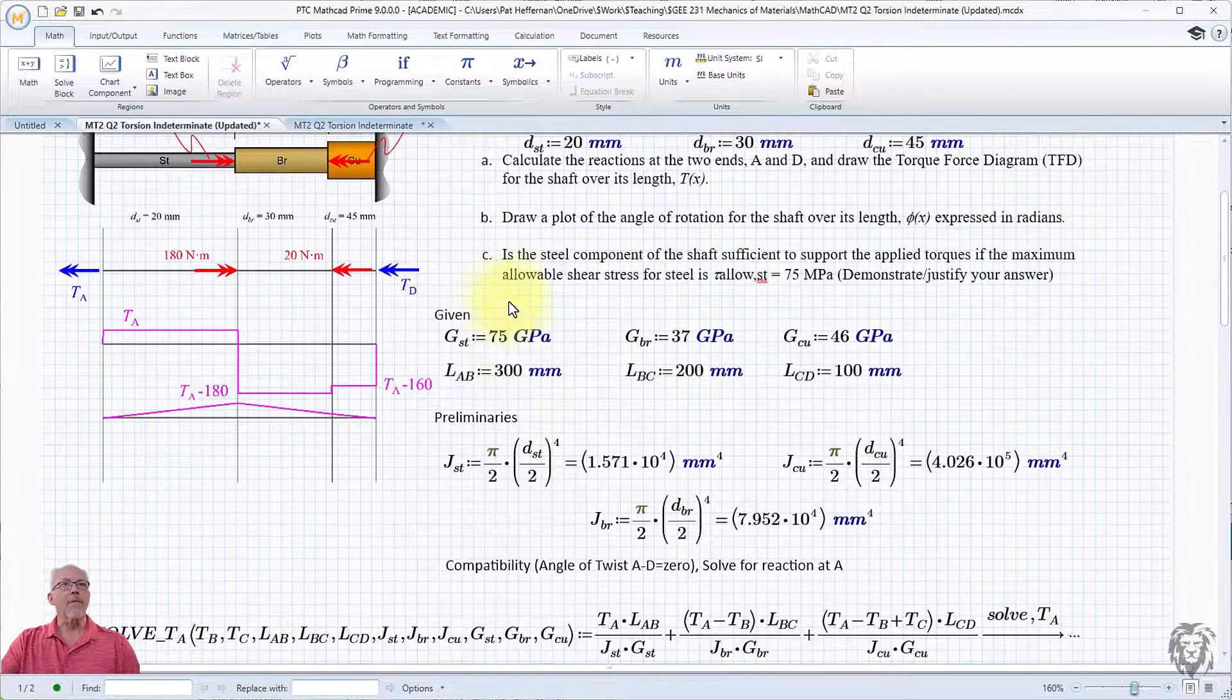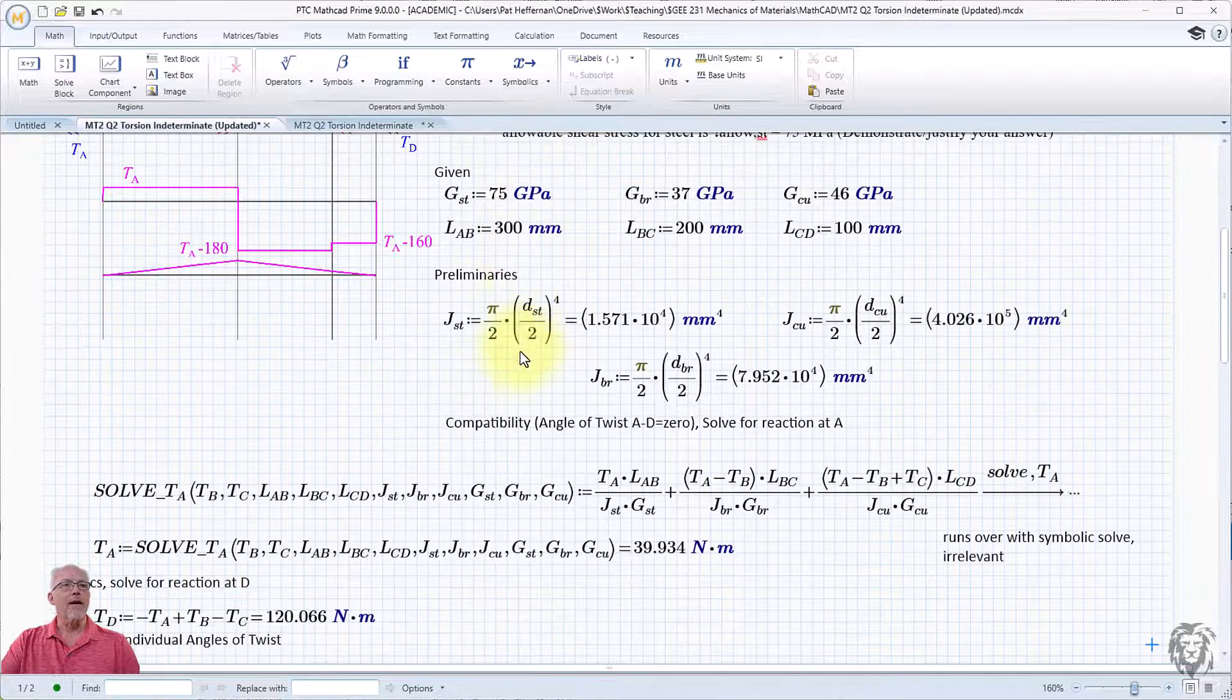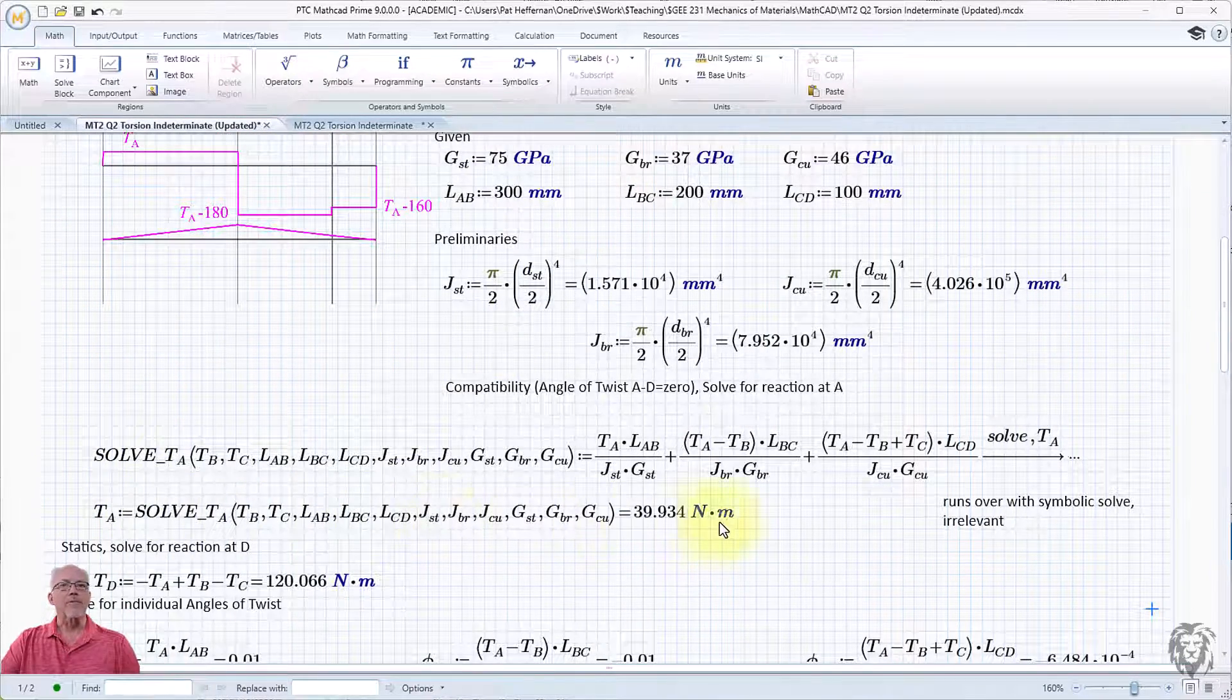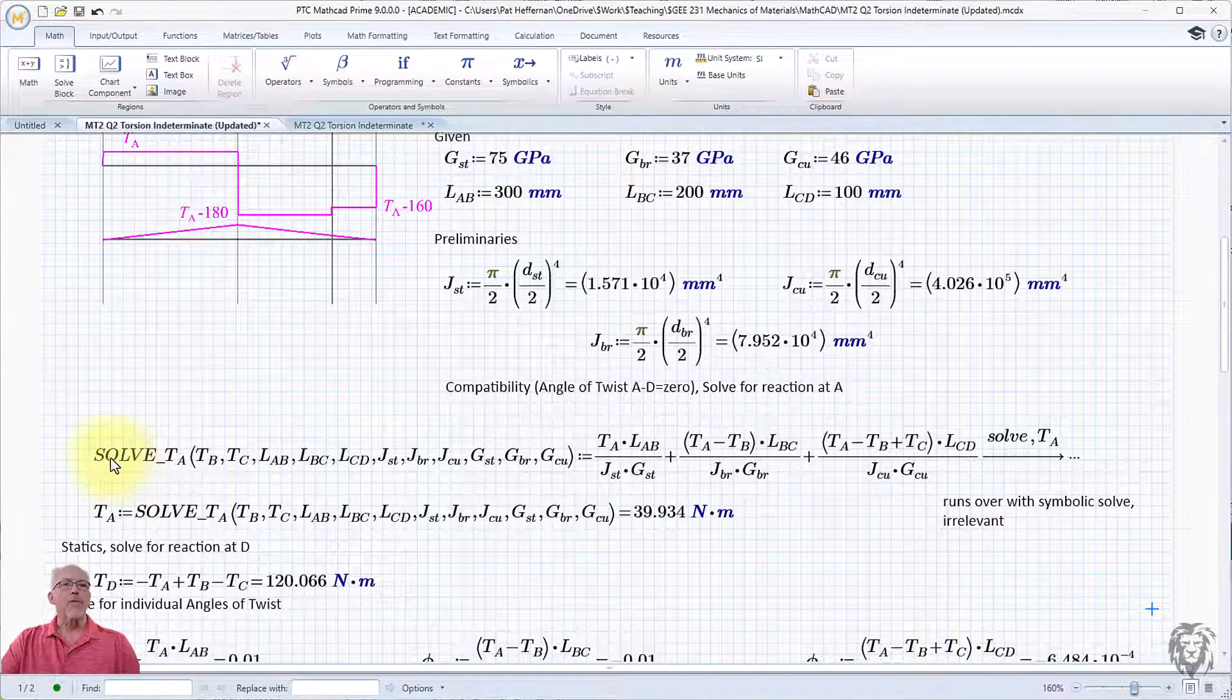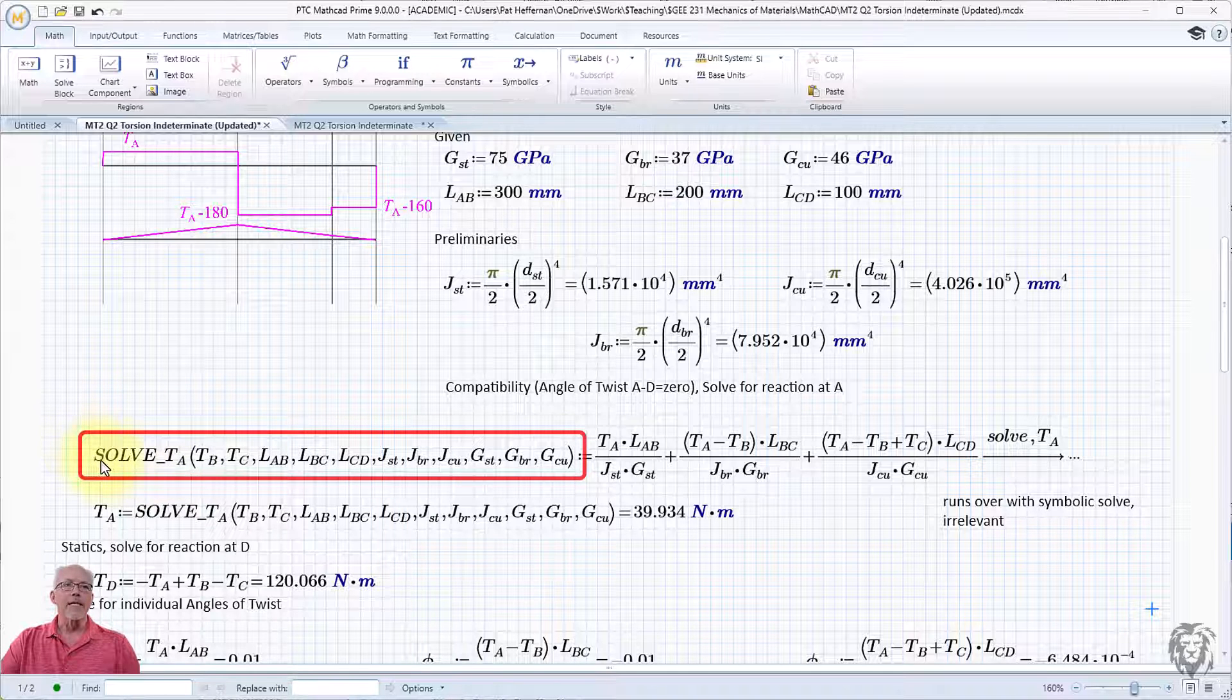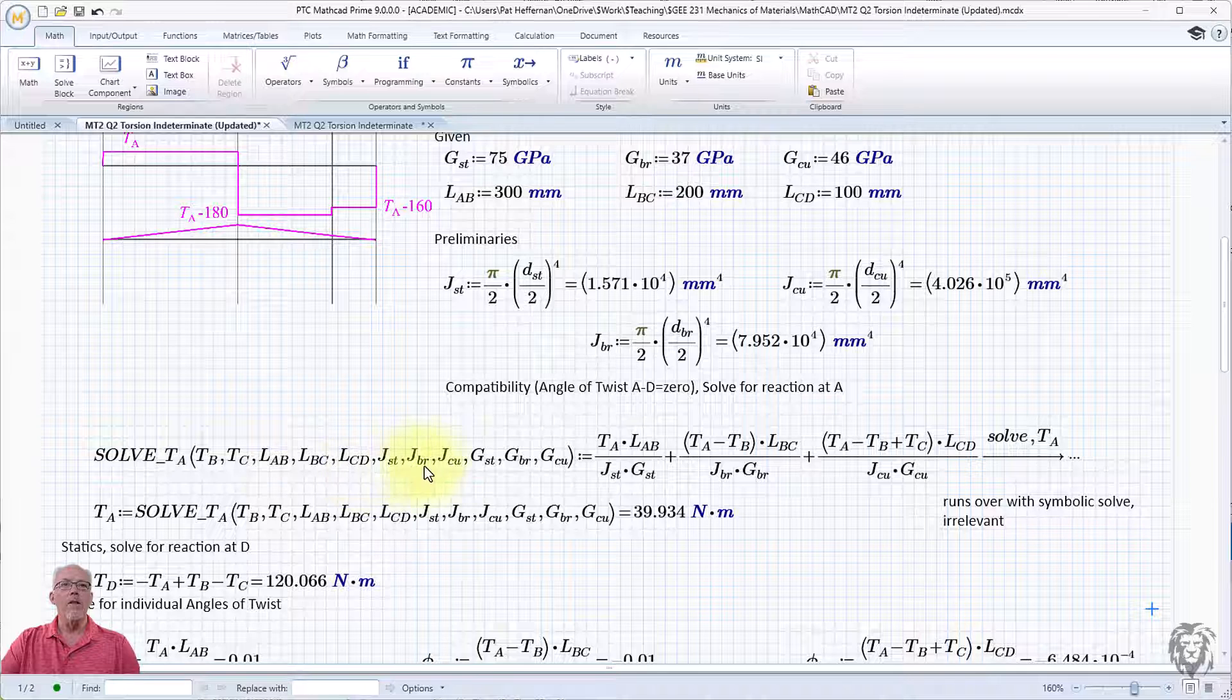So here we have the same problem, scrolling down, and here's where the magic happens right here. So what she did is she said, okay, let's create a dummy function, solve for TA, and we make it a function of all the parameters of the problem,